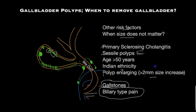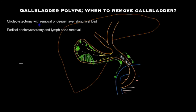Now let's look at what type of operations may be performed in the presence of gallbladder polyps. The surgeon needs to modify the technique when removing the gallbladder for polyps, especially if the polyp is between 1 and 1.9 centimeters in size. This involves removing the deeper layer at the interface between the gallbladder and the liver at the same time, because lymph channels are present in that layer.